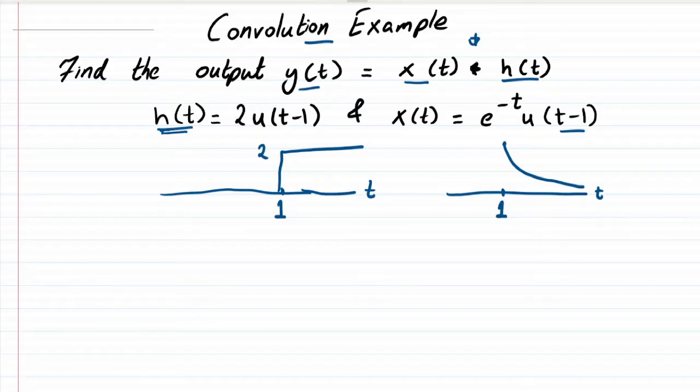These are the two functions that we need to convolve. Eventually what we need is an output y(t) in terms of a convolution integral from minus infinity to infinity.